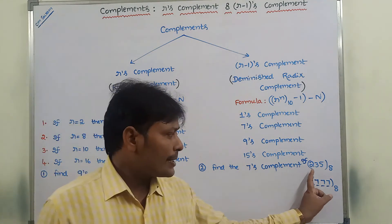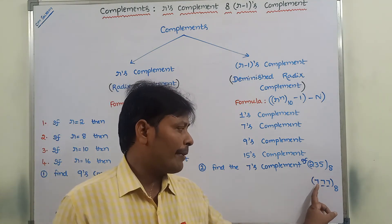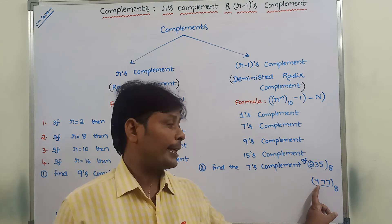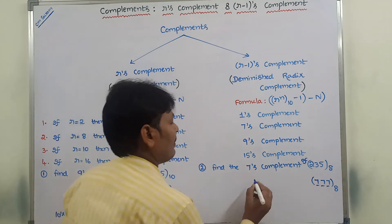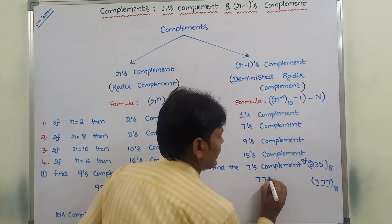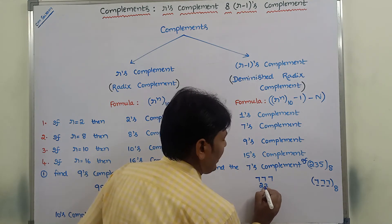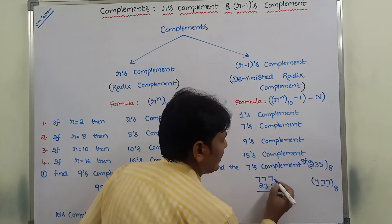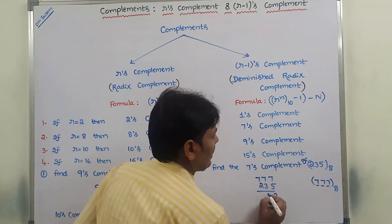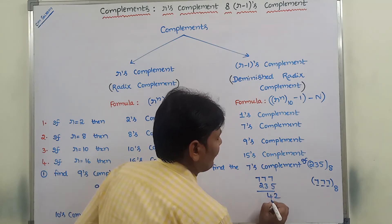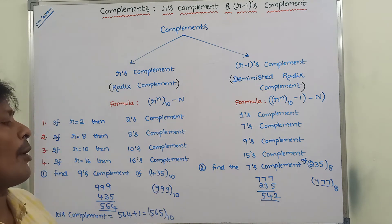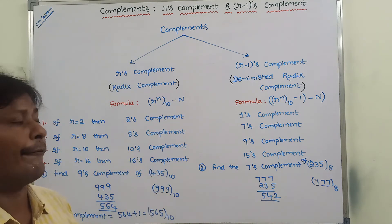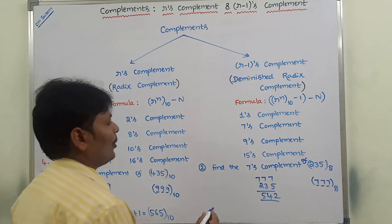Now each and every digit of the given number can be subtracted from 777. That means 777 minus 235: 7 minus 5 is 2, 7 minus 3 is 4, 7 minus 2 is 5. So 542 is the 7's complement of 235 base 8.